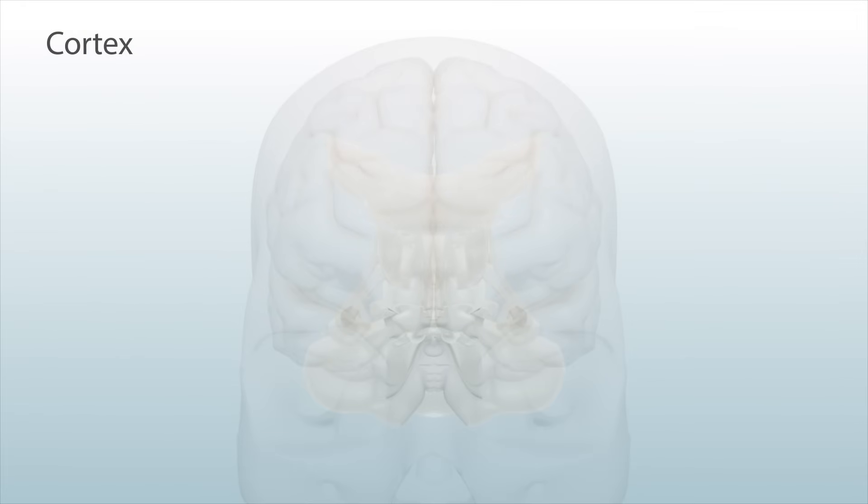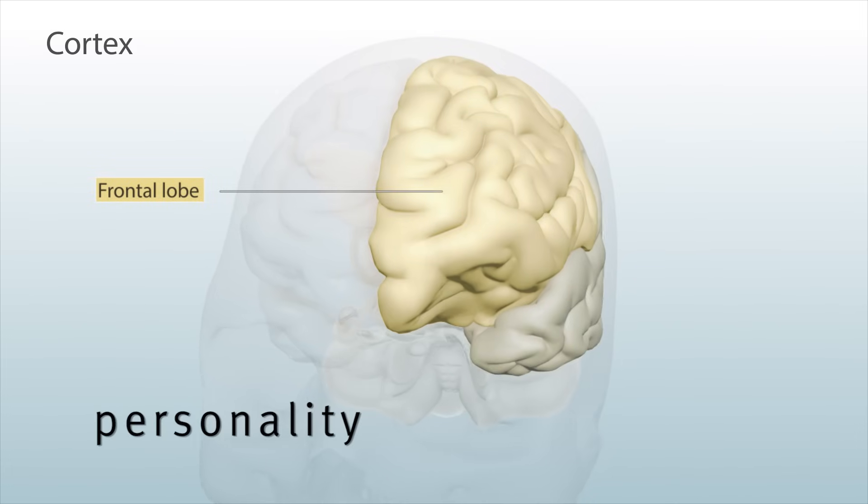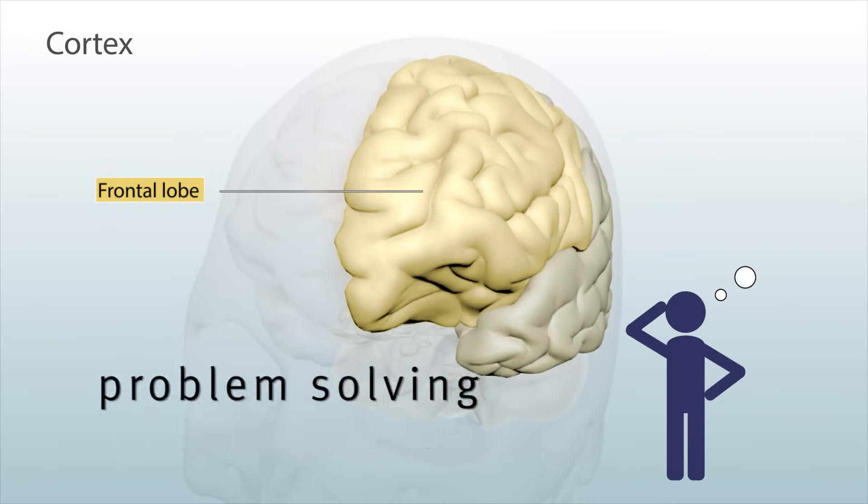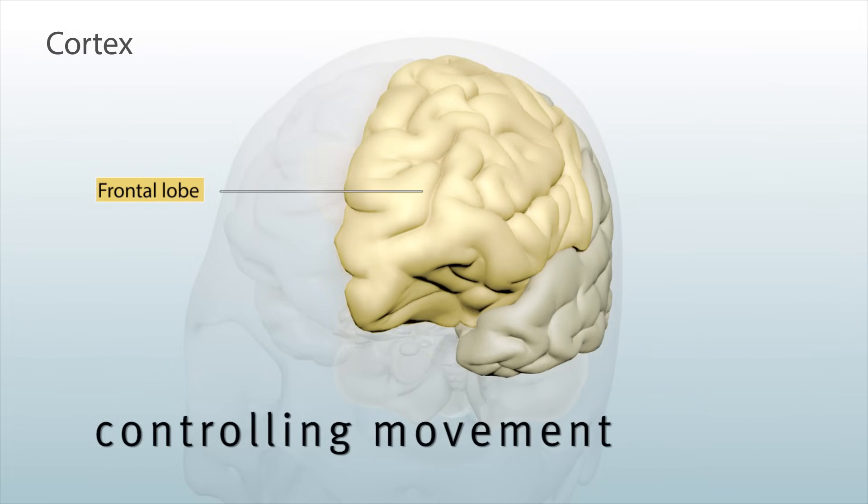The cortex is divided into four regions. The frontal lobe is for personality and emotions, higher thinking skills like problem solving, and controlling movement. It continues to develop until you are in your mid-twenties.